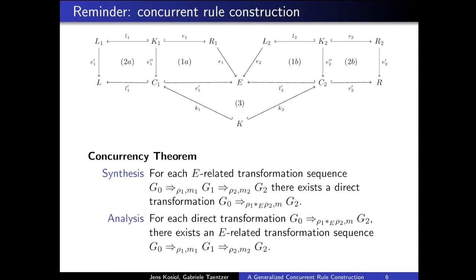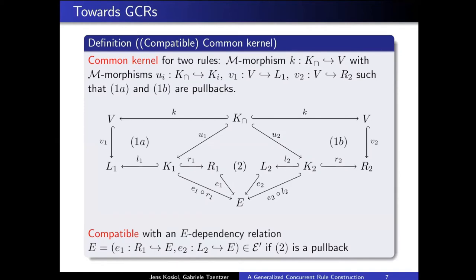Now we want to add to this construction the ability to identify elements which the first rule deletes with elements which the second rule creates. We need some kind of object for this — what we call a common kernel for two rules. A common kernel is basically an M-morphism called K-cap and an object V. This object V identifies elements from L1, and V is embedded into L1 and R2 also via M-morphisms. The relevant squares should constitute pullbacks.